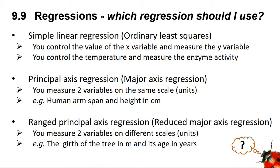If the two variables you are measuring are on the same scale, such as human arm span and human height in centimeters, then you need to use a principal axis regression, sometimes called a major axis regression. However, if the two variables are on different scales, such as measuring the girth of a tree in meters and its age in years, then you need to use a ranged principal axis regression, sometimes called a reduced major axis regression.